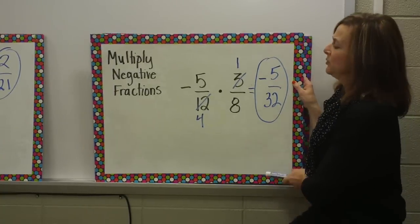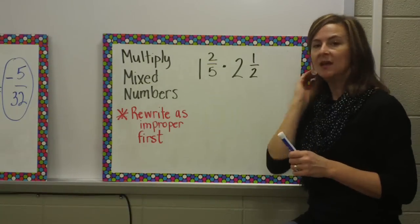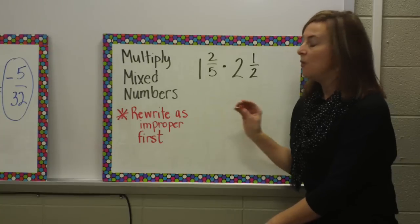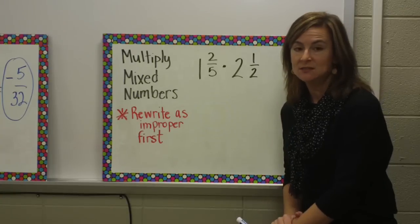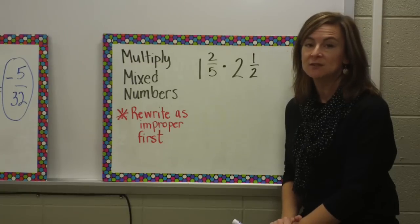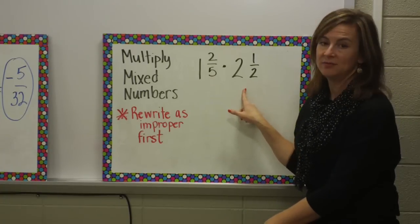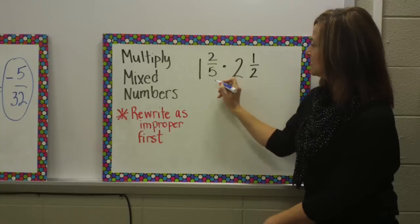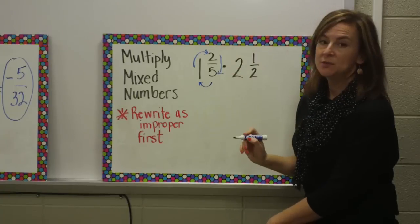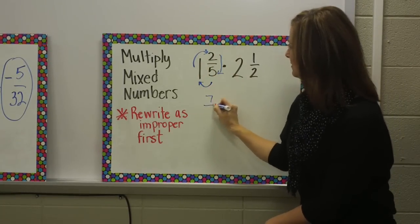The next example that I would like you to write down is multiplying mixed numbers. There's a key here. When we multiply rational numbers, you have to have only fractions to start. Whenever you have mixed numbers, rewrite as improper fractions first. Here we have one and two-fifths times two and one-half. Remember, we talked about MAC, starting at the bottom, multiplying, add, and copy. To rewrite one and two-fifths, I would have five times one is five, plus two is seven, over five.